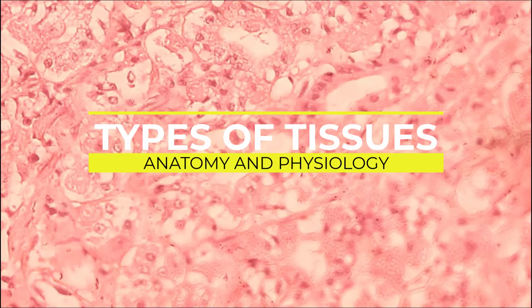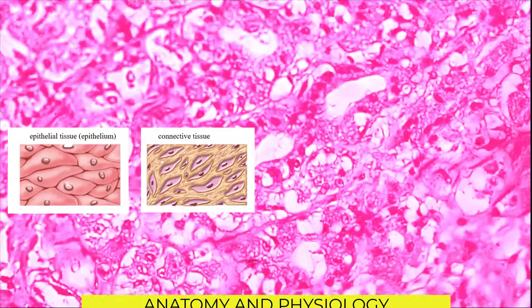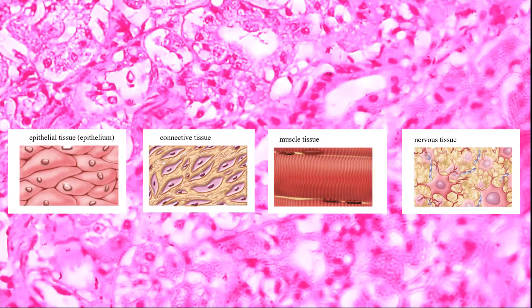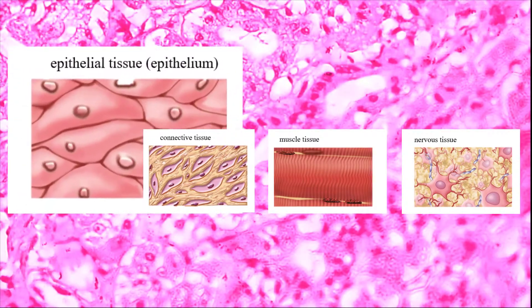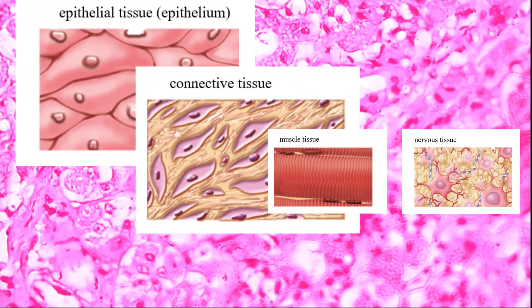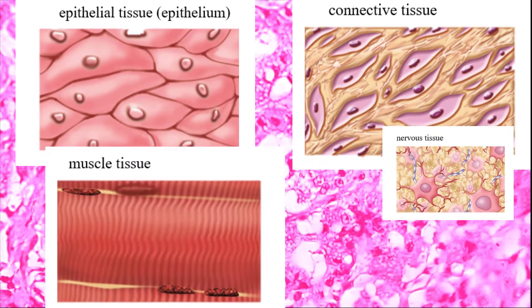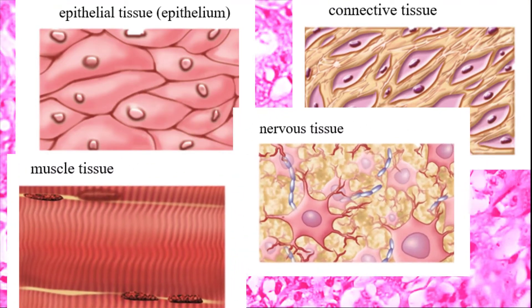Types of Tissues. The four tissue types include epithelial tissue, connective tissue, muscle tissue, and nervous tissue.